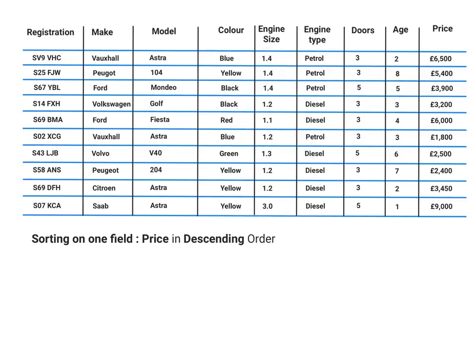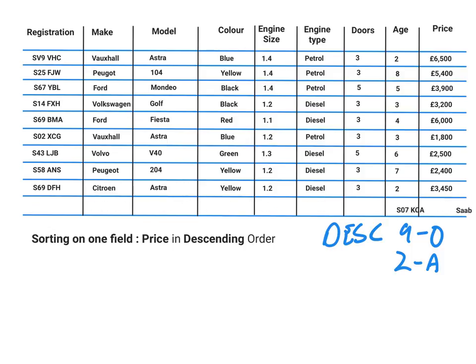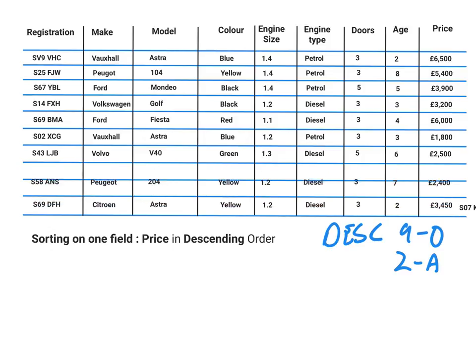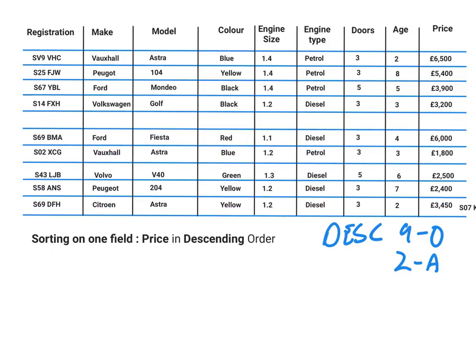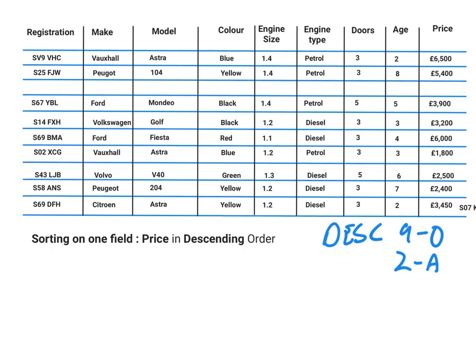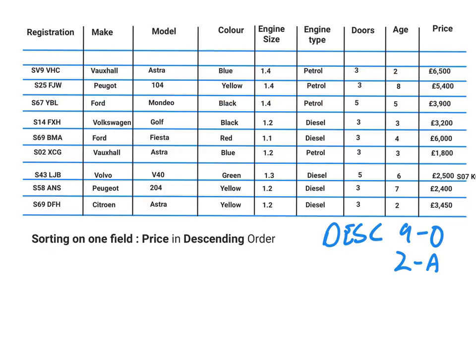This time we are going to sort on the price field, but into descending order. Just to remind you that descending order means 9 to 0 or Z to A. So the highest value is going to be first. We can see that 9,000 is at the bottom, and we're just going to drag everything else down so our first value is the 9,000.